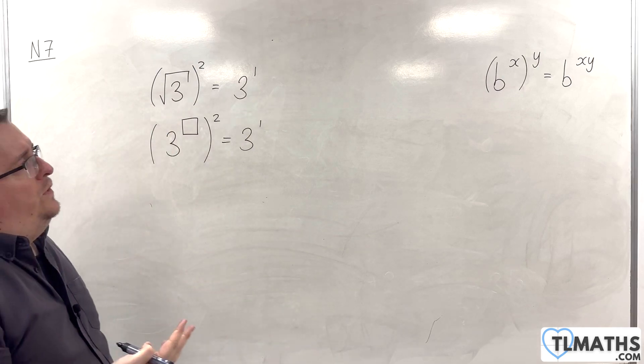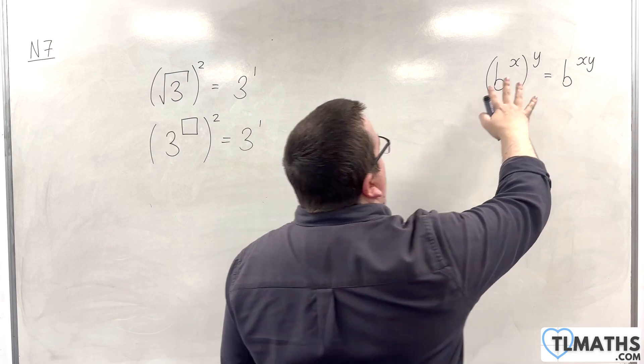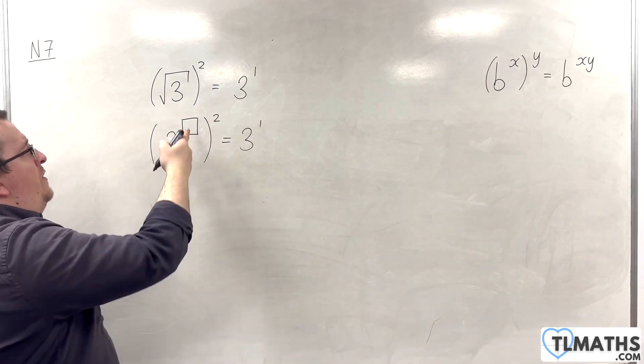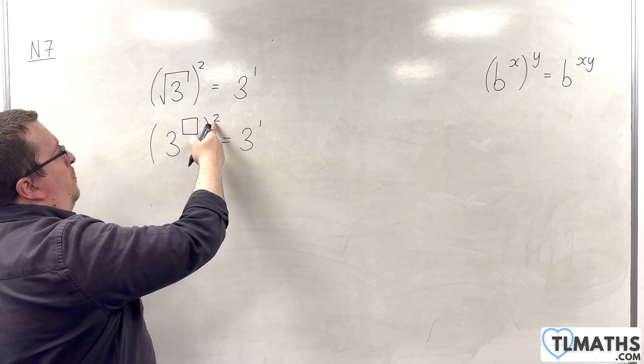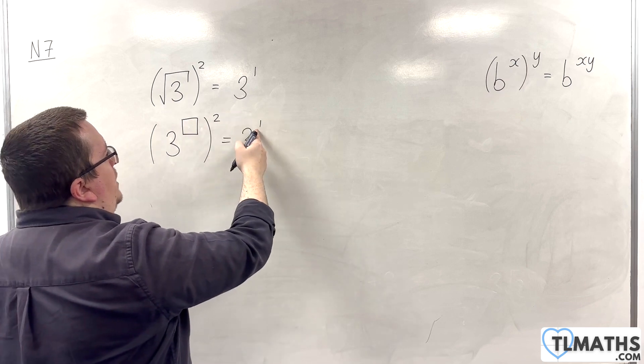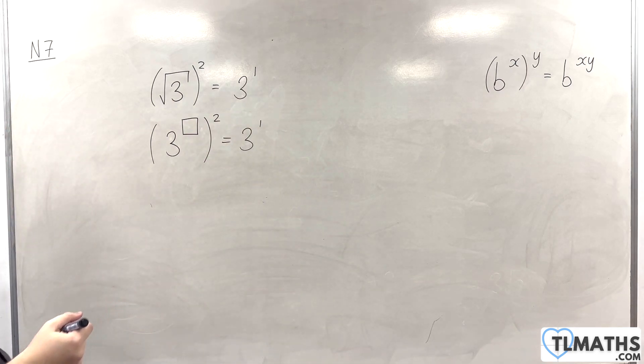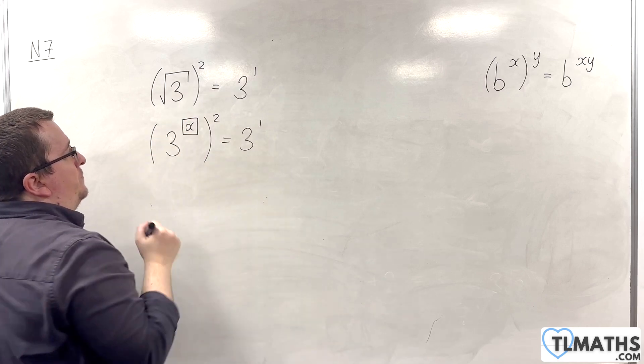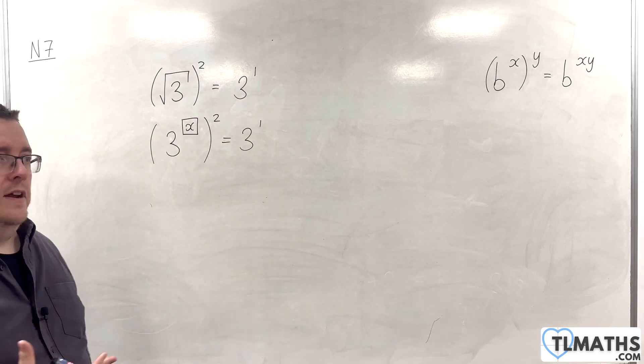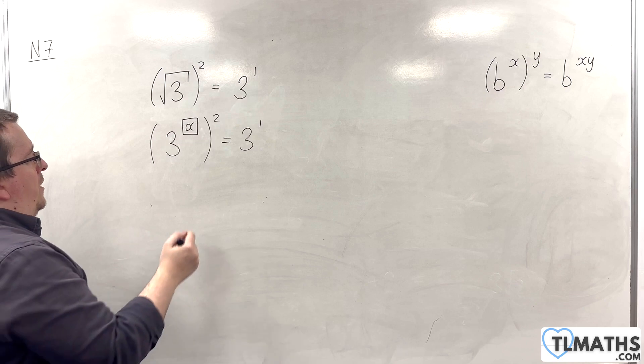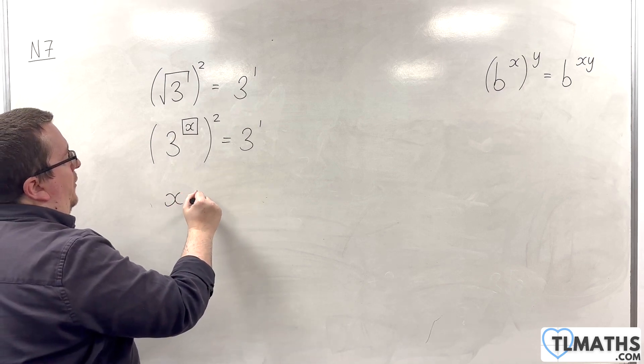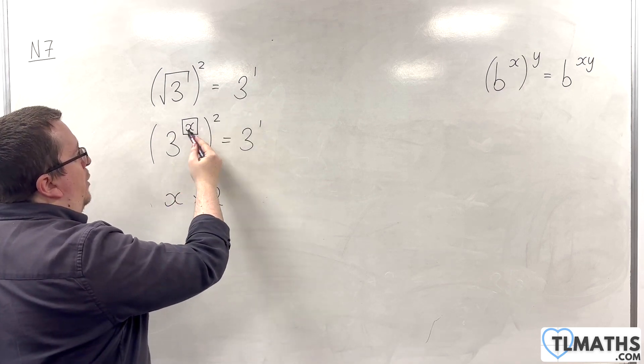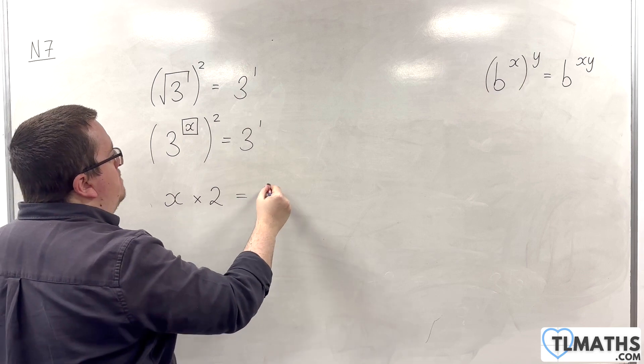Now, using our result over here, I know that this number needs to multiply with the 2 to make 1. So, let's say that this value is x, this unknown that I need to find. What I'm saying is that x times by 2, when I multiply those indices together, I must get 1.